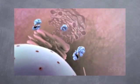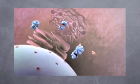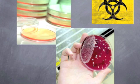Genetic engineering, also called genetic modification, is the direct human manipulation of an organism's genetic material in a way that does not occur under natural conditions. It involves the use of recombinant DNA techniques, but does not include traditional animal and plant breeding.